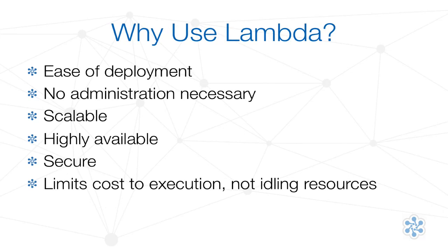There are many reasons to consider using Lambda. It is very easy to deploy and administer functions. We don't have to worry about selecting and configuring the proper EC2 instances to run our code. Lambda helps us achieve scalable, high-available workloads right out of the box. As with all AWS services, security is a shared responsibility. AWS does its part to ensure our code runs in its own sandbox away from all other processes.